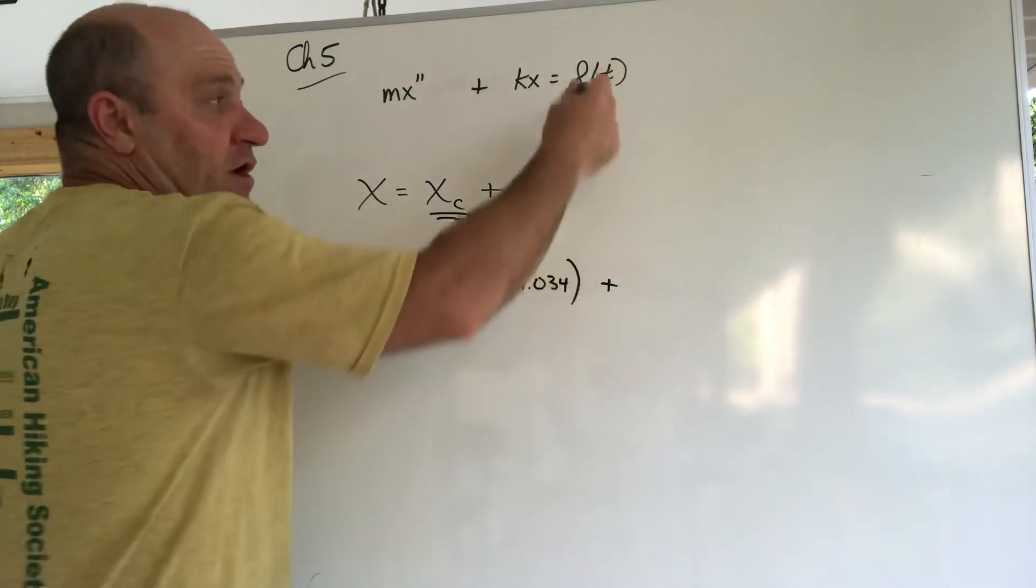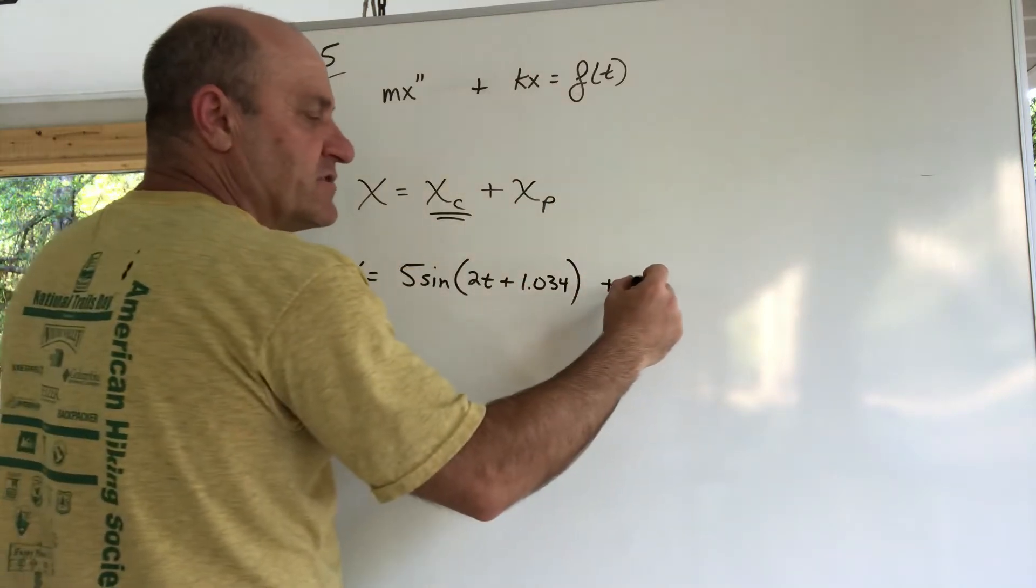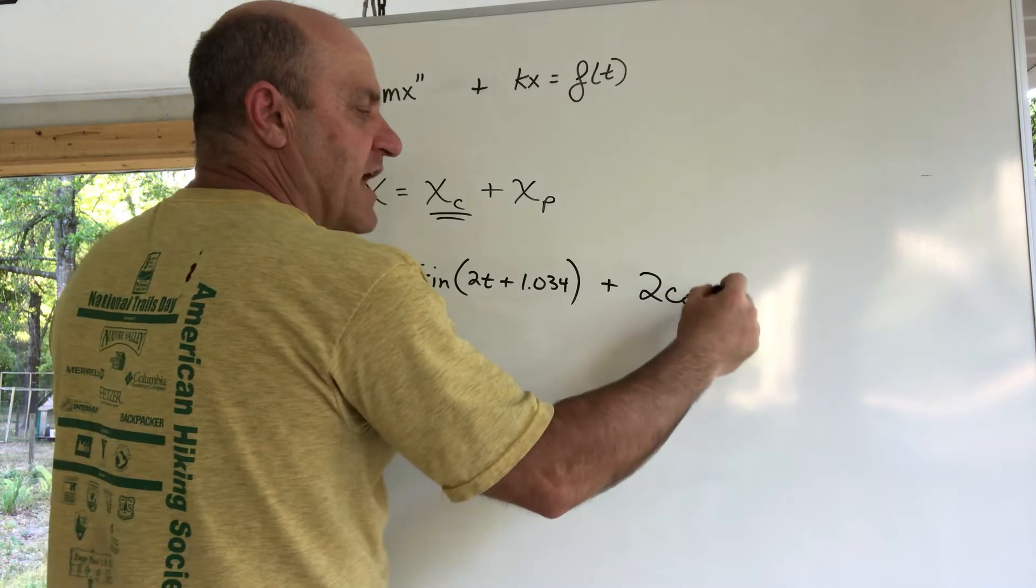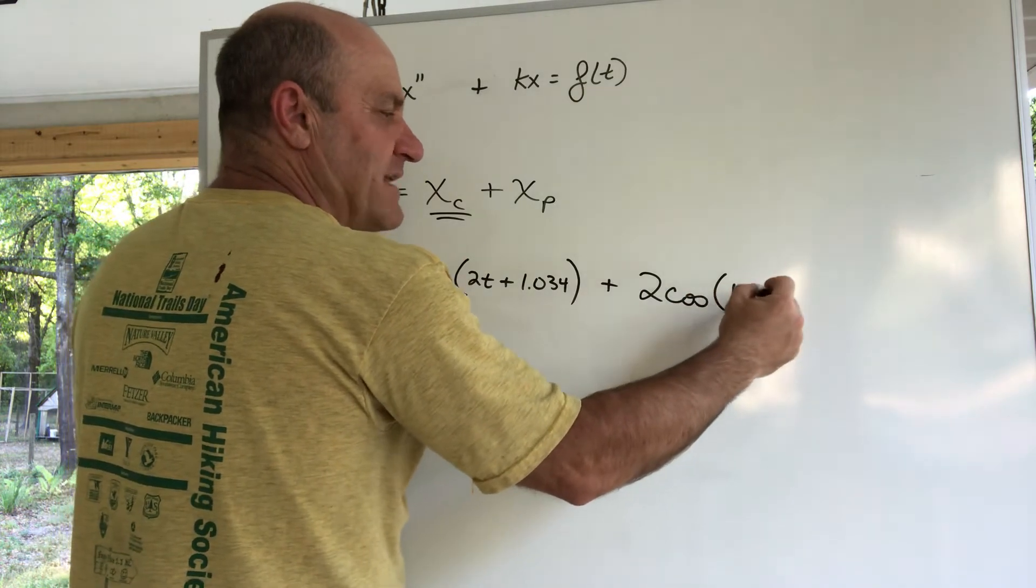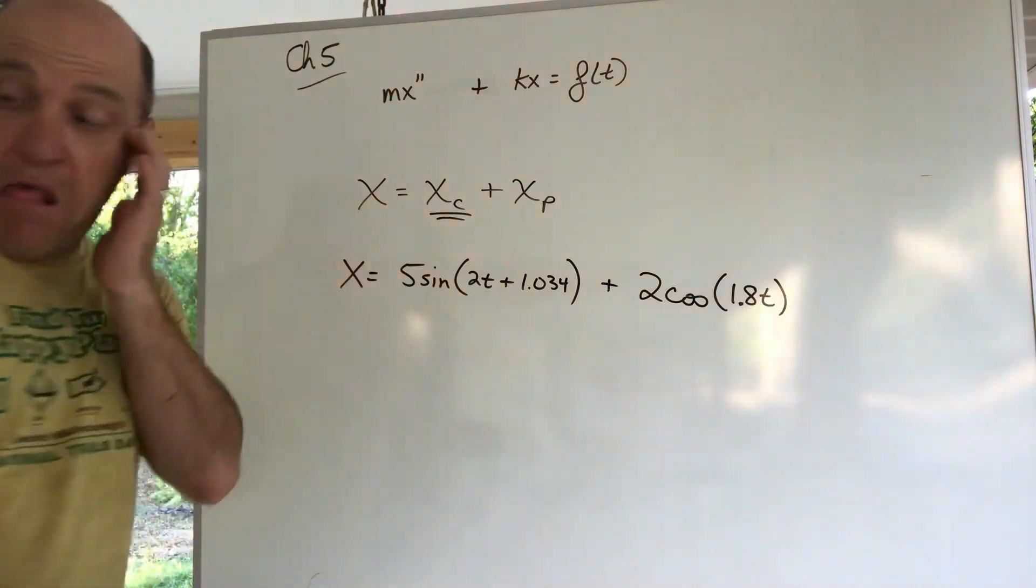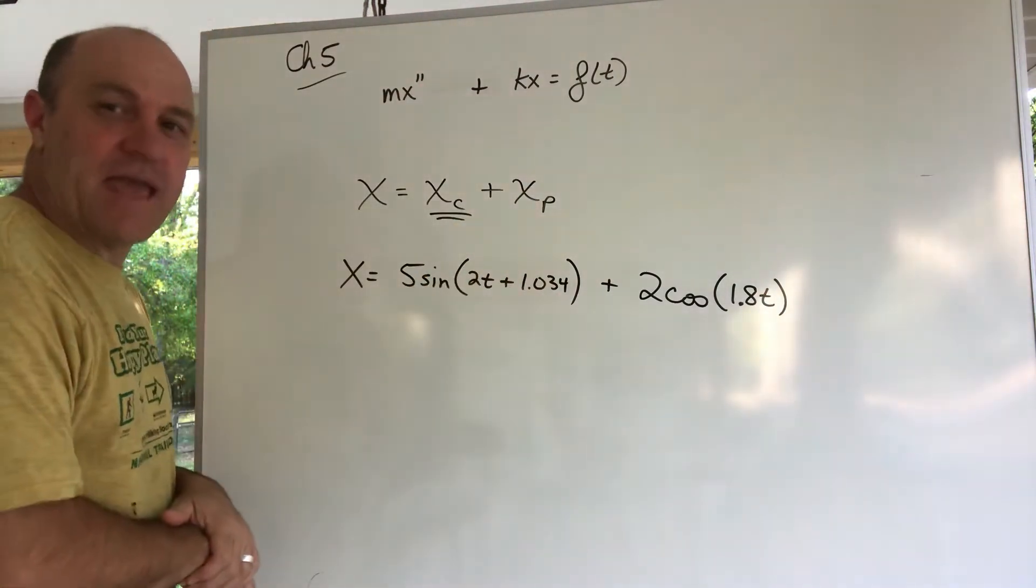I'm going to pretend that the original function over here was also a cosine or a sine function with a slightly different frequency. So I'm going to make up a problem, I'm going to pretend I have this 2 cosine 1.8t.